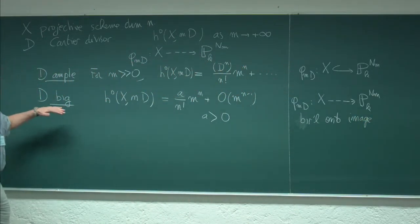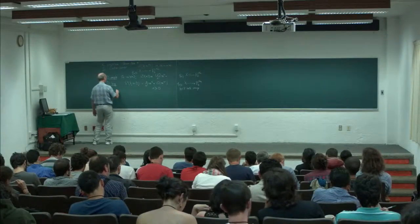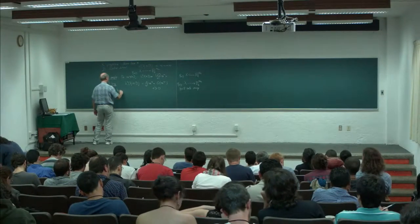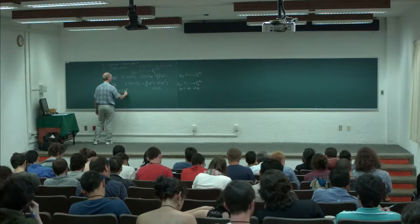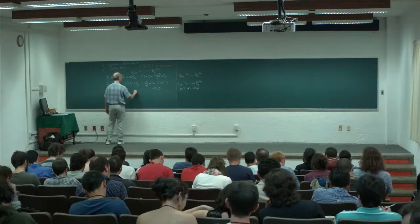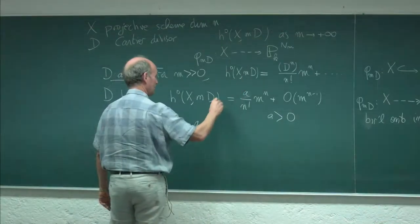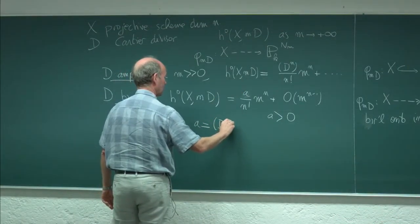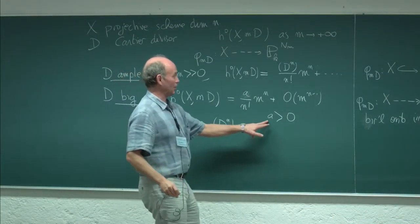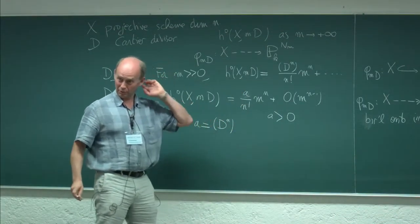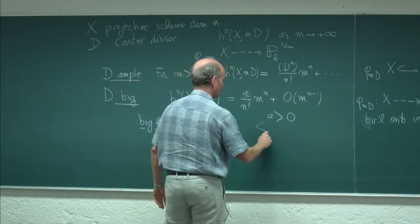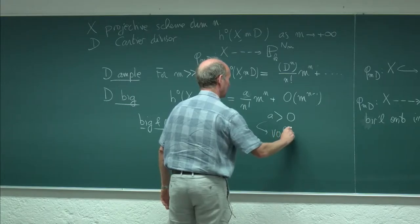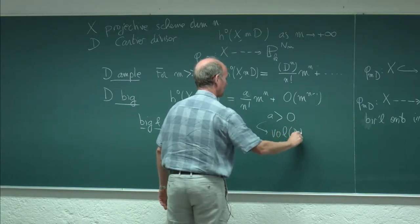When D, in addition to being big, is nef, then this number a here is the intersection number D^n. This number a is actually called the volume of D.